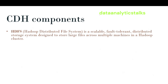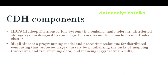HDFS, Hadoop Distributed File System, is a scalable, fault-tolerant, distributed storage system designed to store large files across multiple machines in a Hadoop cluster. MapReduce is a programming model and processing technique for distributed computing that processes large datasets by parallelizing the task of mapping — processing and transforming data — and reducing, aggregating the results.